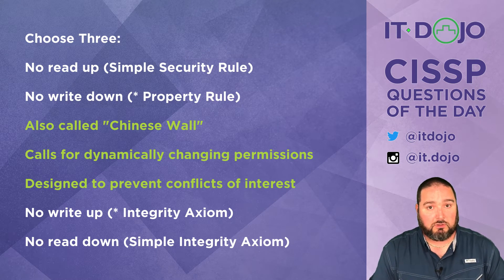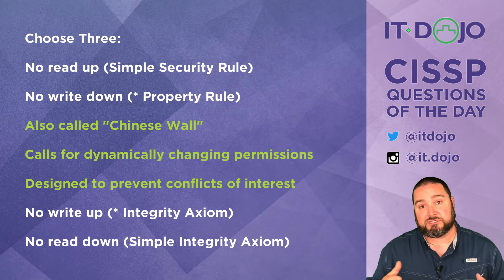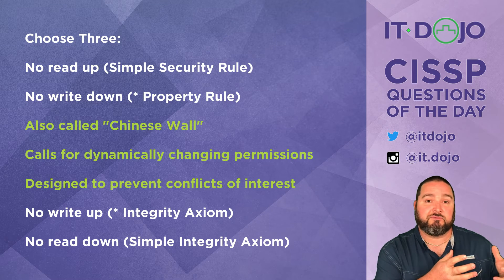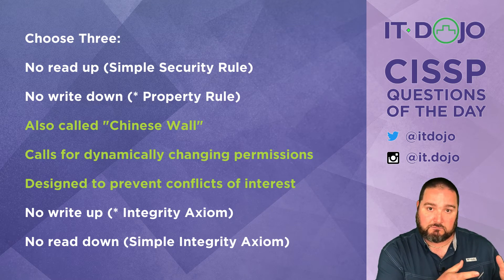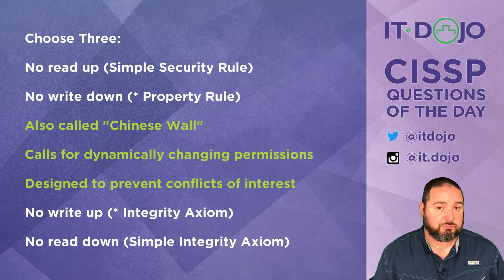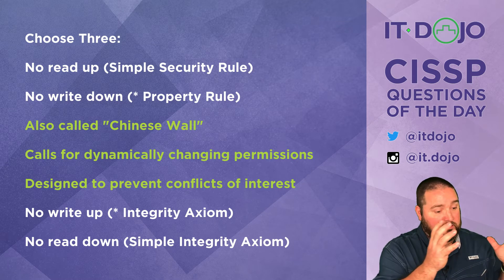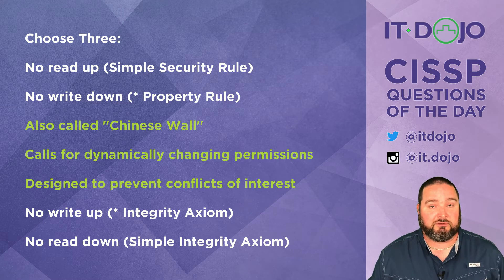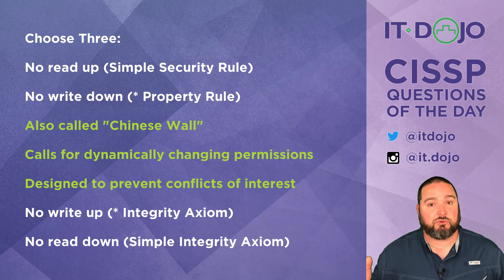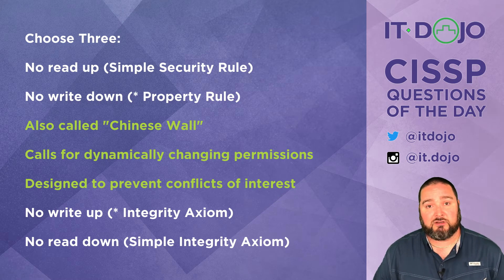If a user — associated as a principal on the system — logs in and performs a read operation on files in the Bank of America company data set, that action dynamically changes their permissions for that specific principal. They would no longer be able to read information in the Citibank company data set, because reading data from both could create conflict of interest scenarios. In other words, a Chinese Wall is dynamically erected between the two data sets to prevent that conflict of interest.